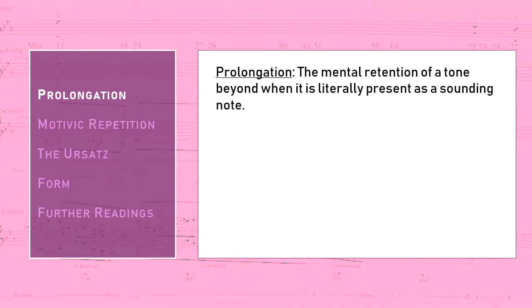One of the most important pieces of vocabulary in Schenkerian analysis is the idea of prolongation, and we are finally in a position to appreciate what it means. Prolongation is the mental retention of a tone beyond when it is literally present as a sounding note — and there again is the tone versus note distinction that we mentioned in the second video. For instance, if I were to ask you to sing scale degree 2, in order to do that you would have to have some mental awareness of where scale degree 1 is. You would have to keep scale degree 1 in the back of your mind while you pay attention to scale degree 2. And prolongation is really nothing more complex or mysterious than that.